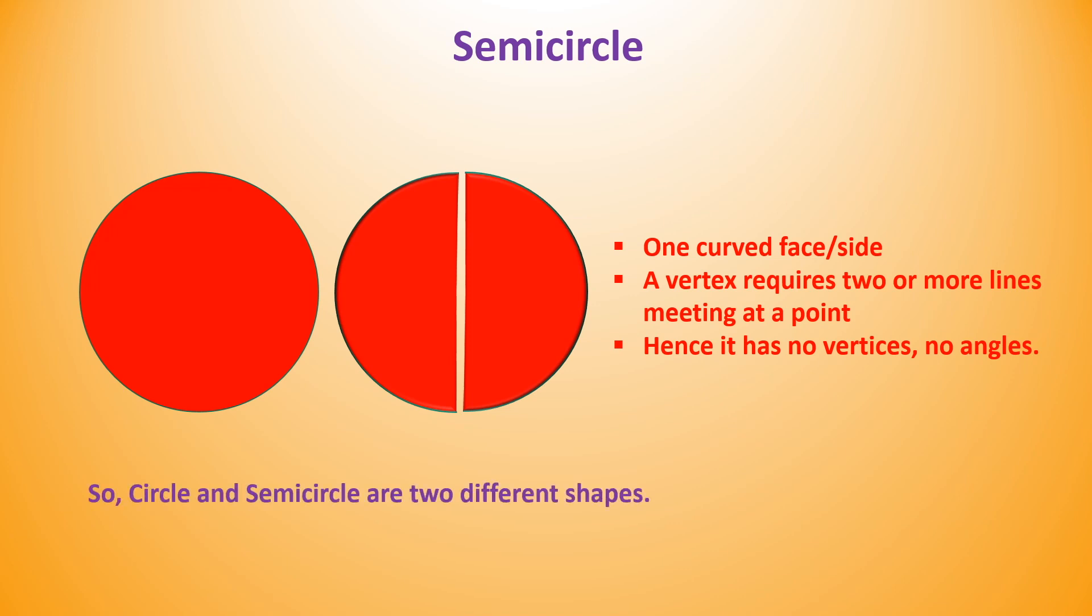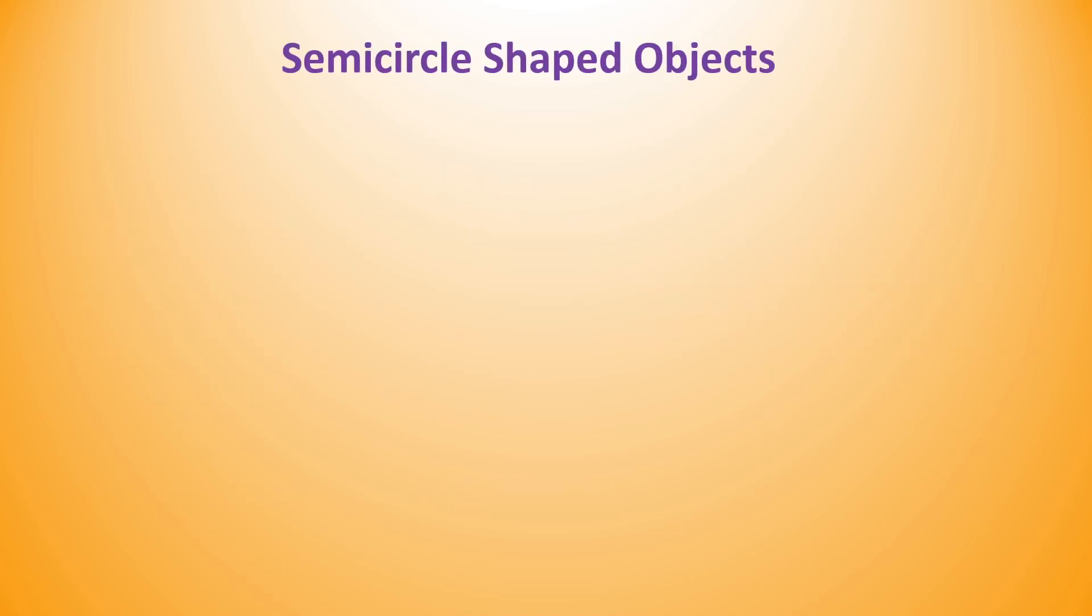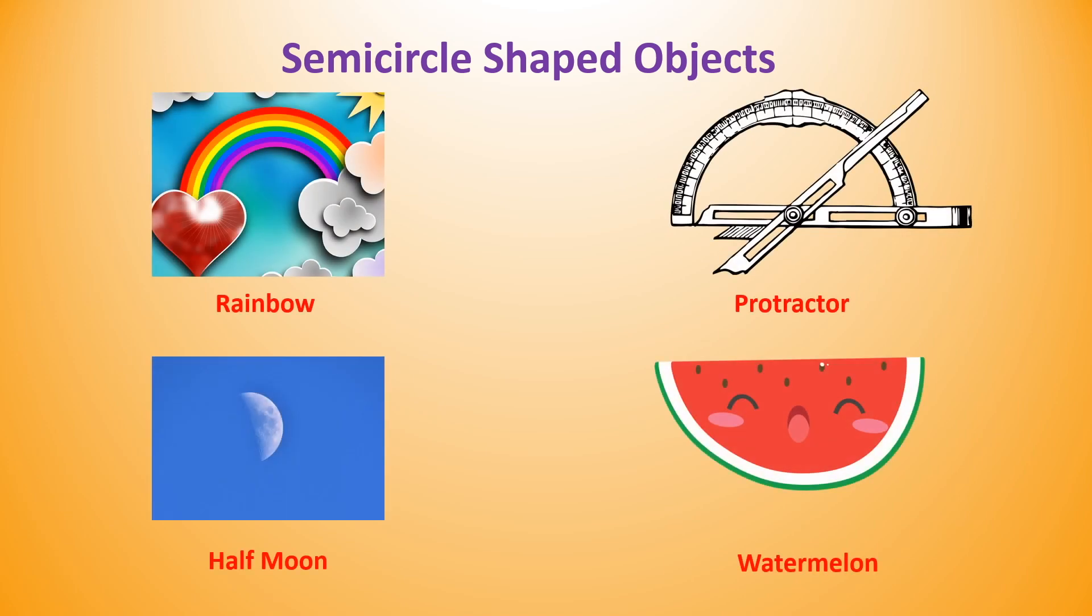So, circle and semi-circle are two different shapes. Semi-circle shape objects include rainbow, protractor, half moon, watermelon. In all these objects, you can see the shape of a semi-circle.